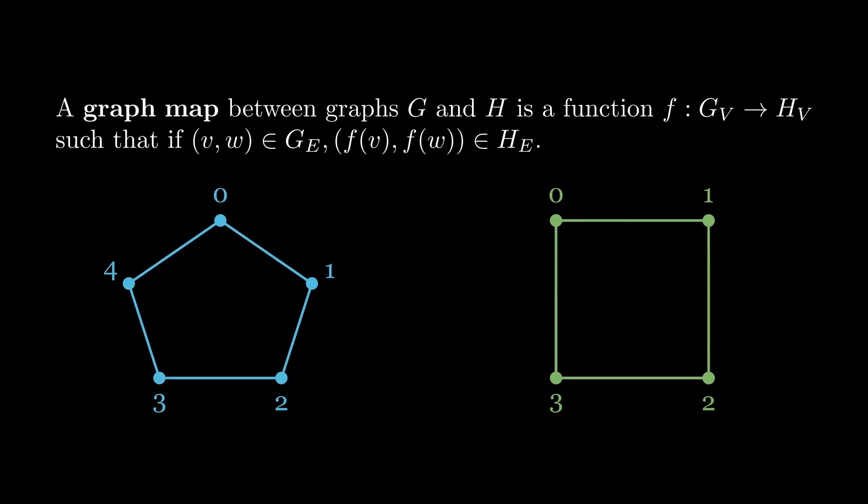However, the map from C4 to C5 in the other direction that just sends V to V is not a valid graph map because there's this edge between 0 and 3 that doesn't get sent to an edge in C5.